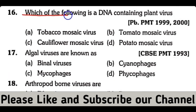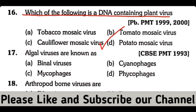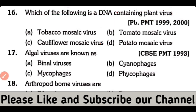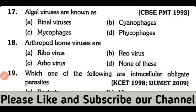Question number 16. Which of the following is a DNA-containing plant virus? Tobacco mosaic virus, tomato mosaic virus, cauliflower mosaic virus, or potato mosaic virus. So the correct answer is option C. Cauliflower mosaic virus contains DNA and it is a plant virus.